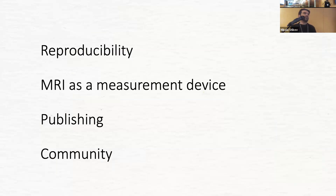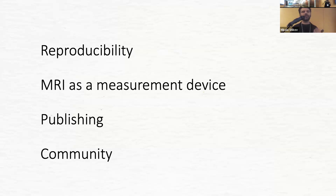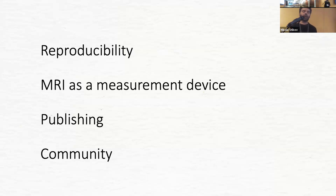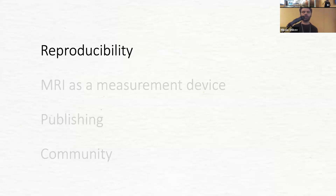Now we get to the structure of the talk. I want to talk about four things that all circle around quantitative MRI. Before I introduce the concept, I want to say a couple of words about reproducibility. You may have heard from Russ about reproducibility — he spoke about fMRI, which is a type of quantitative MRI — but I'll try to take a zoomed-out picture.